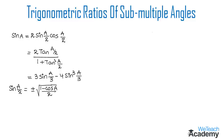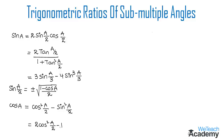Now coming to the next trigonometric ratio, which is cos A. So cos A will be equal to cos squared(A/2) minus sine squared(A/2), or we can also write cos A equal to 2 cos squared(A/2) minus 1. The other formula for cos A in terms of tan is 1 minus tan squared(A/2) divided by 1 plus tan squared(A/2).